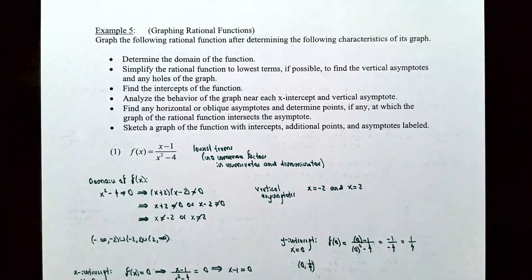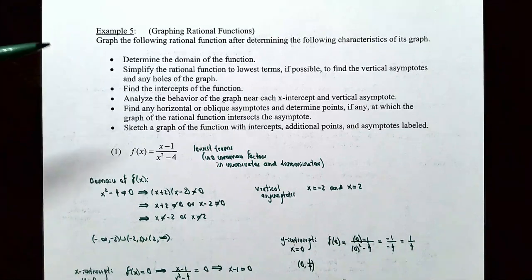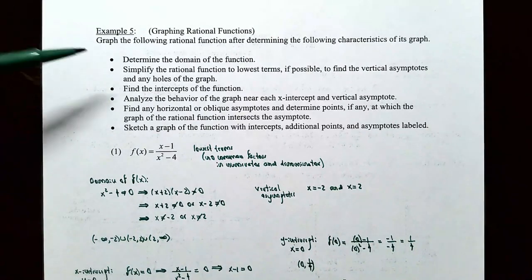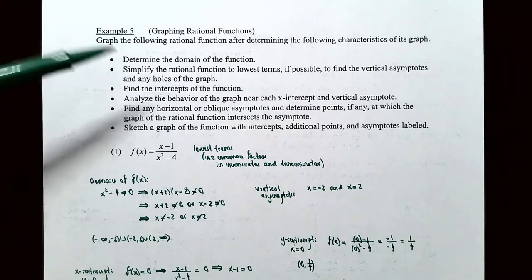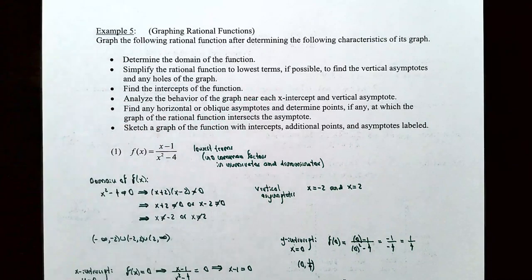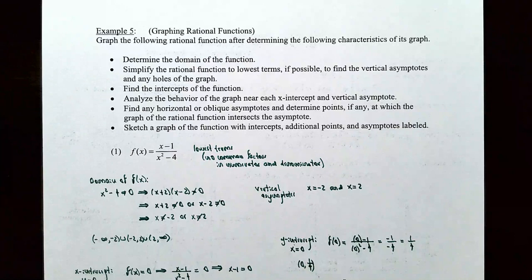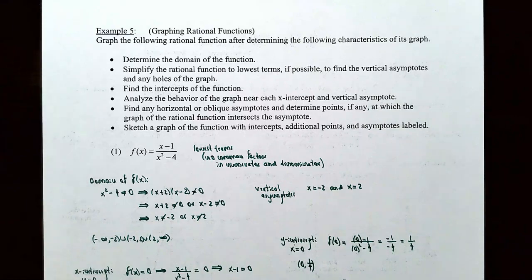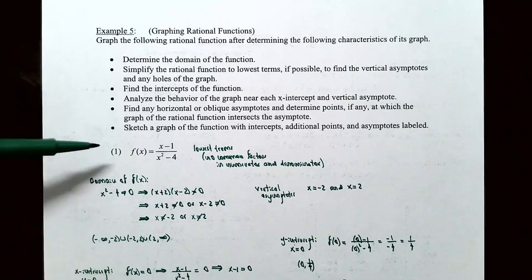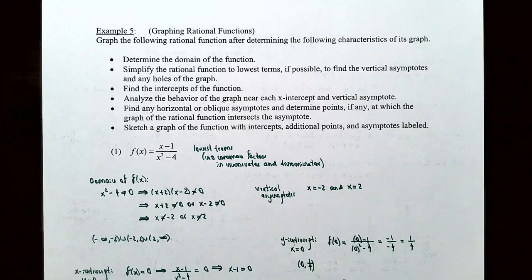Example 5: graphing rational functions. We'll determine the following characteristics: the domain, simplify to lowest terms if possible, identify vertical asymptotes or holes, find x-intercepts and y-intercept, analyze behavior near each x-intercept and vertical asymptote, find horizontal or oblique asymptotes and intersection points, and finally provide a sketch with all intercepts, additional points, and asymptotes labeled.